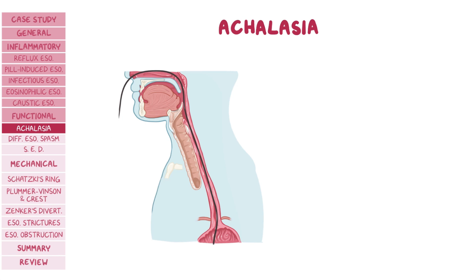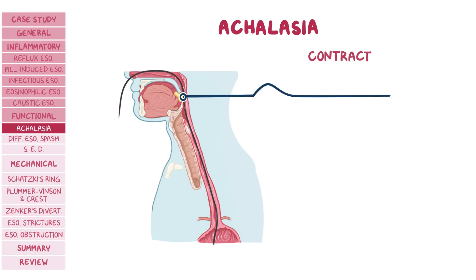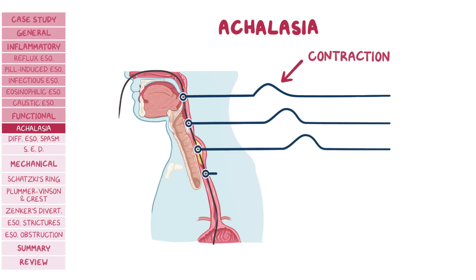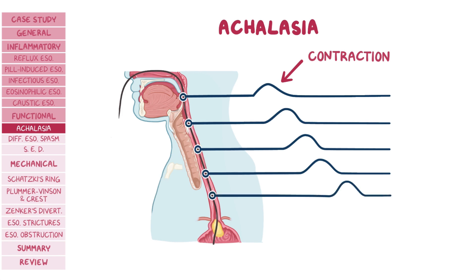Normally when a person swallows, involuntary contractions of the pharyngeal muscles propel the food into the esophagus. Propulsion of the food bolus is followed by contraction of the cricopharyngeal muscle, which initiates the peristaltic wave of the esophagus, shown as an upward deflection on upper esophageal manometry. Next, the middle esophageal manometry reflects normal peristalsis of the middle esophagus. Finally, the lower esophageal manometry reveals the decrease in lower esophageal sphincter pressure corresponding to its relaxation and the passing of the bolus into the stomach.